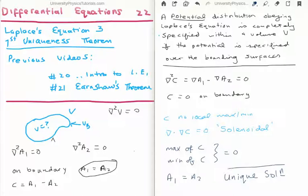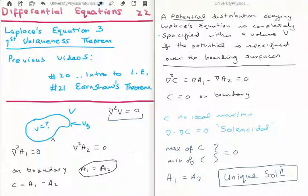Now, why is this important? It's important because if, through whatever possible means, or whatever means you can possibly imagine, you are able to solve Laplace's equation and come up with a solution that fits the boundary conditions, then you know for a fact that you have the only solution. Because that's what the first uniqueness theorem says.